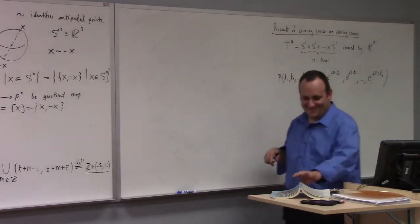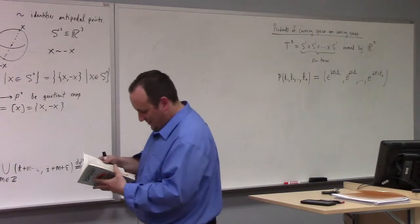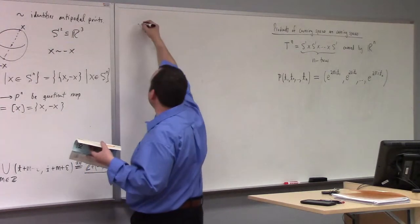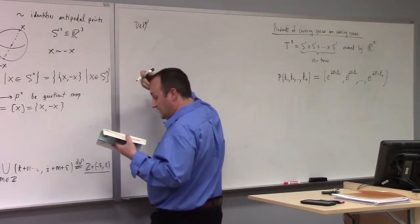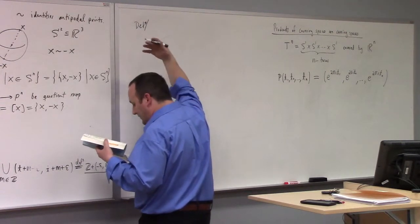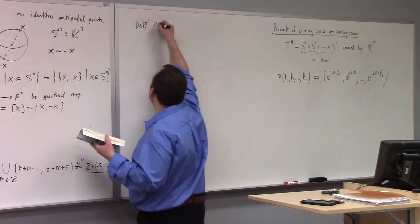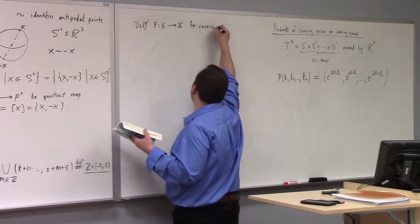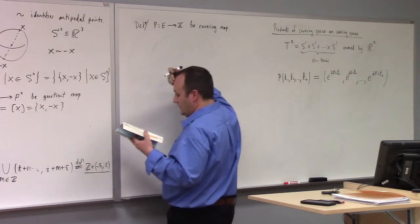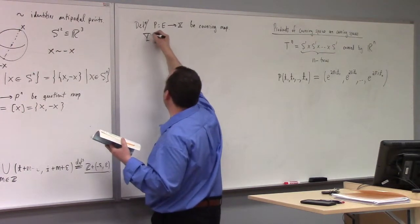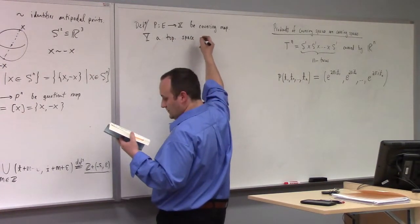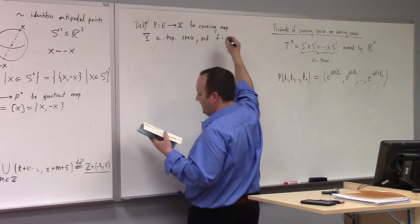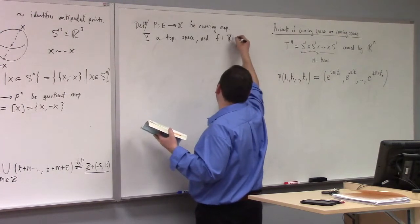We're not gonna answer that today. So finally we reached the next important definition of a covering map - well rather a lift. Let p from E to X be a covering map, Y a topological space, and f a continuous map from Y to X.